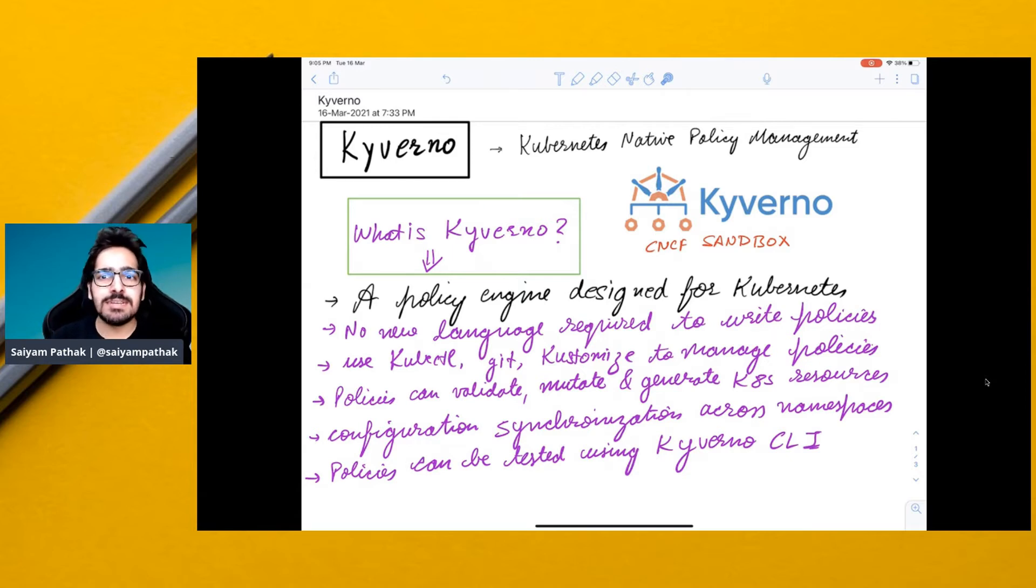So Kyverno is Kubernetes native policy management and it is a CNCF sandbox project. Now let's understand what Kyverno is. It is a policy engine designed for Kubernetes. So it's very Kubernetes native. It understands the Kubernetes objects. You can use kubectl get customized to manage the policies and there is no new language required to write the policy. So it's basically a declarative way in which you can write the policy and you do not need to learn any new language for that.